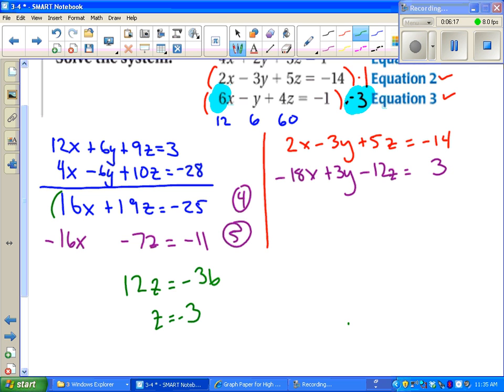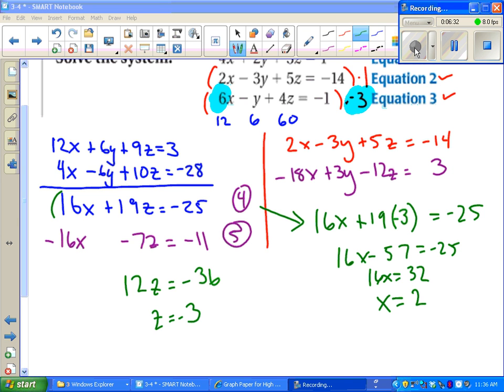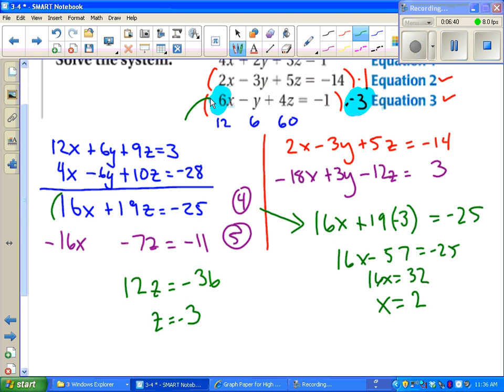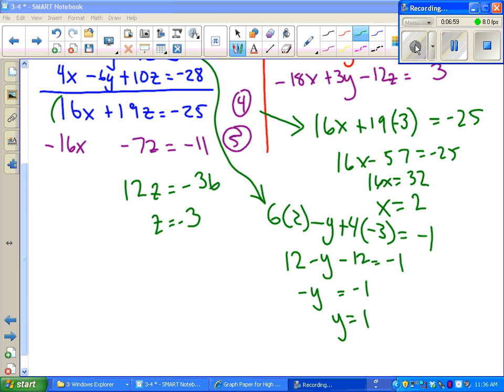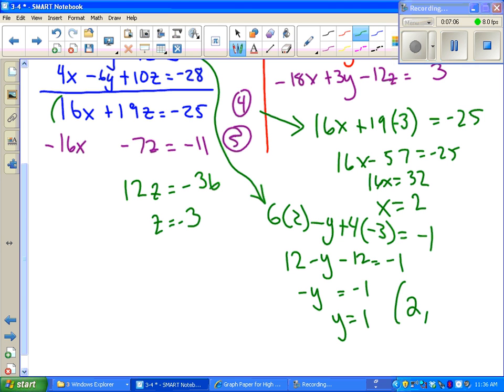Once we know z, we can go back to equation 4 or 5 to figure out x. 16x plus 19z equals negative 25. Using some simple algebra steps, we can solve for x. Once I've got x, I'm still not done. I'm missing y. I have to go all the way back to the beginning to equation 1, 2, or 3 and figure out y. 6 times x minus y plus 4z equals negative 1. Again, we go through some simple algebra steps and we'll get y. The only thing that's left at this point is to put them as an ordered triplet. We don't call it an ordered pair because there's three numbers. x comma y comma z. And then we're done.